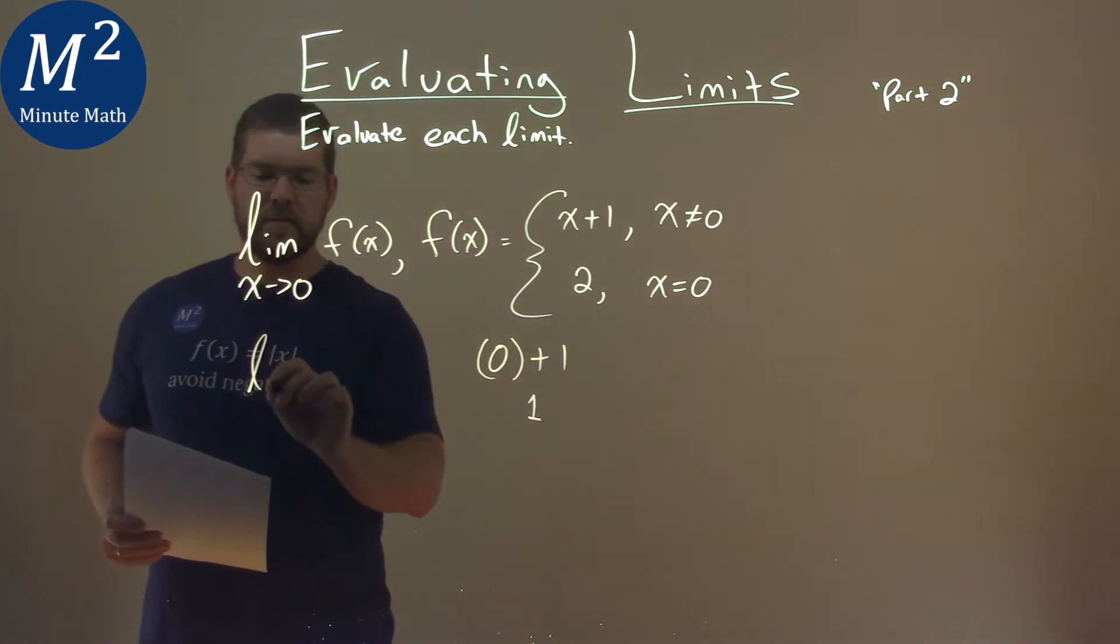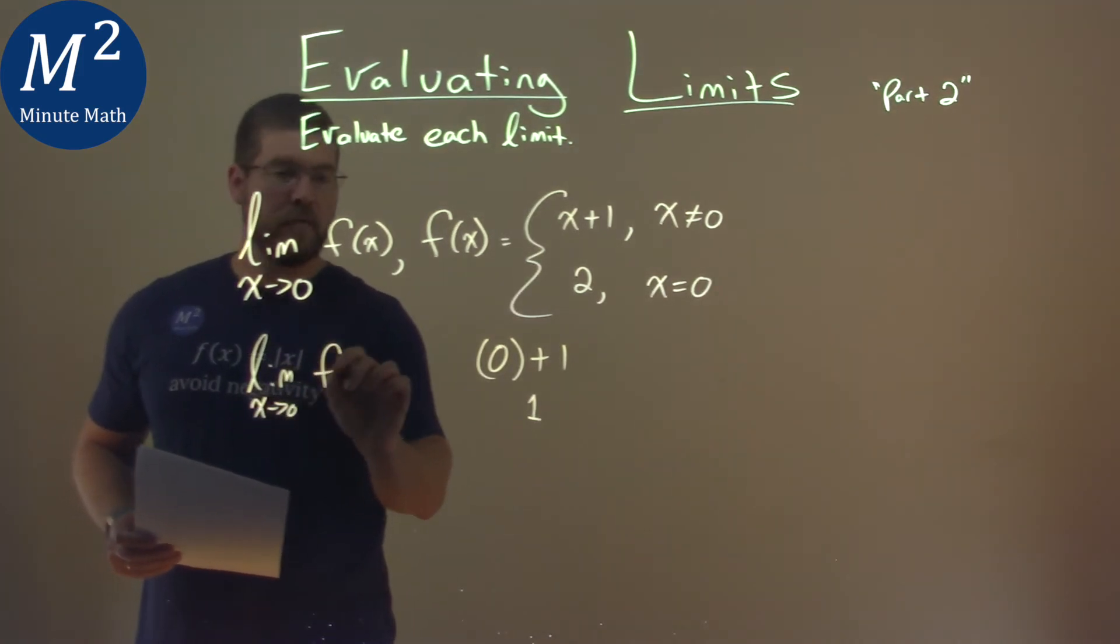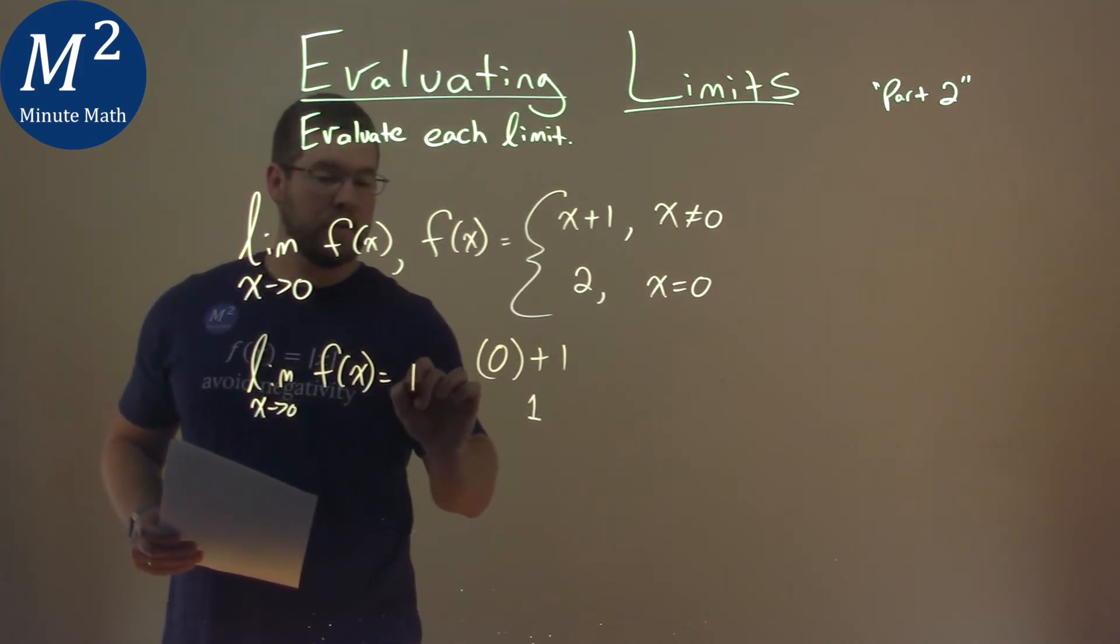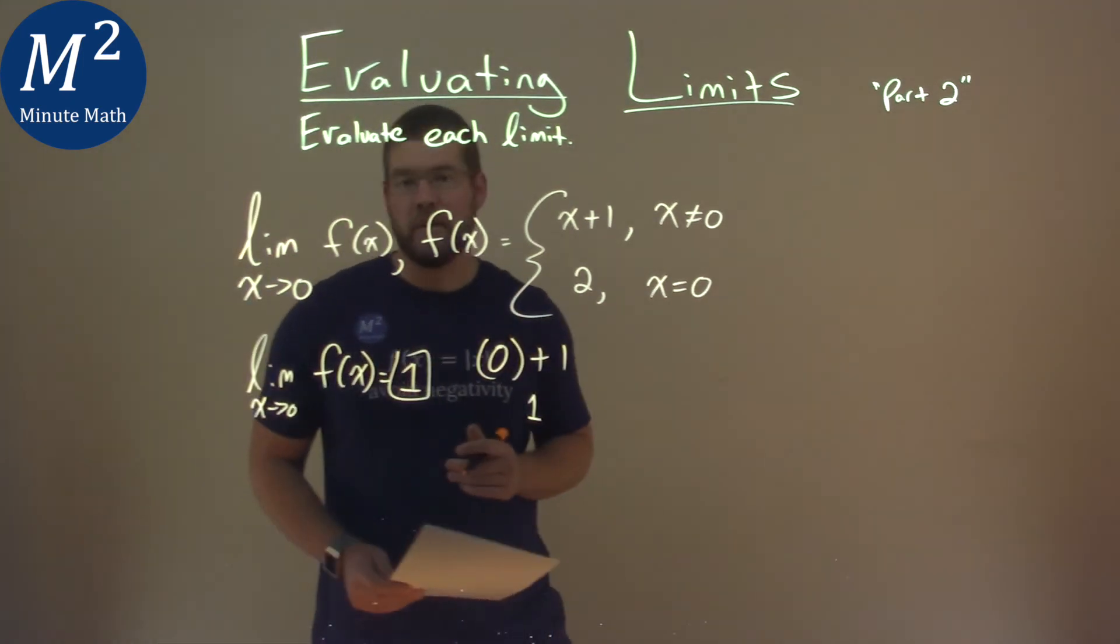So we would say that this limit as x approaches 0 of our function, f of x, is equal to 1, and that's our final answer.